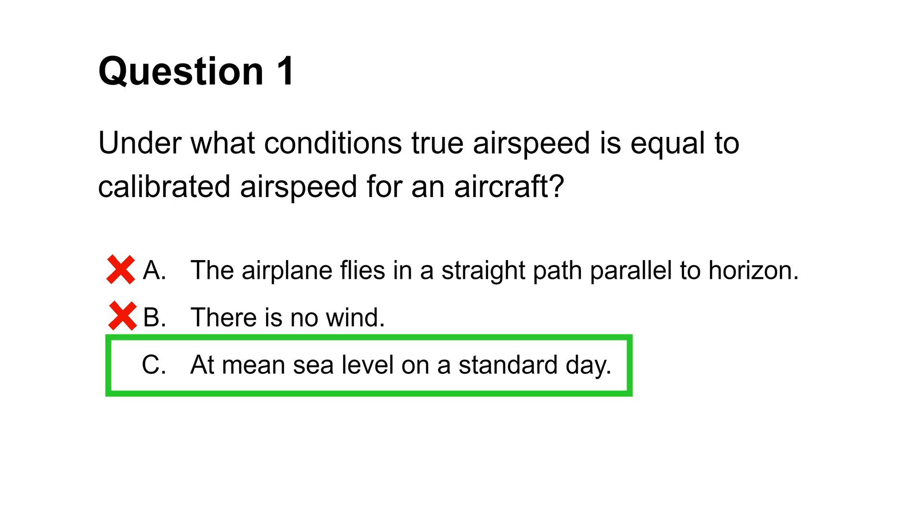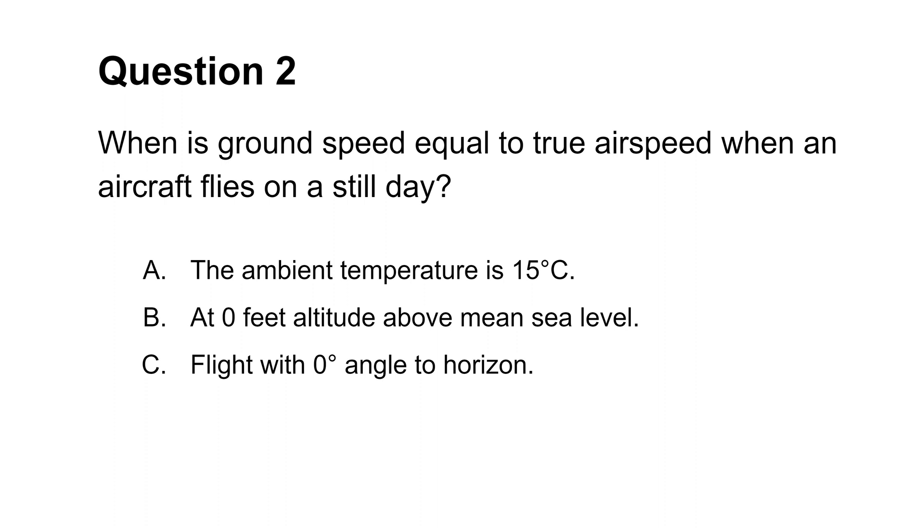The next question asks you to identify the conditions under which ground speed and true airspeed are the same. As we just covered in the previous question, ambient temperature and altitude are some of the conditions for true airspeed and calibrated airspeed to be the same. For ground speed and true airspeed to be equal, the aircraft must fly on a still day with no wind and 0 degrees angle to horizon. This makes choice C the answer.